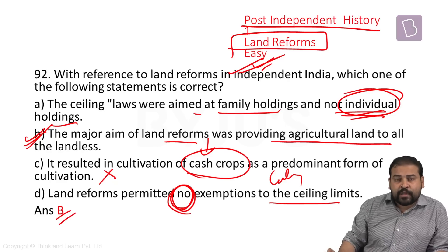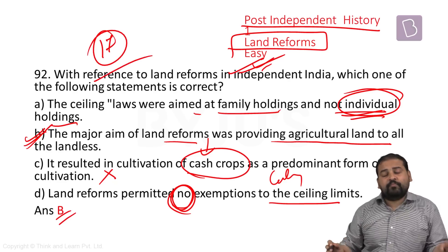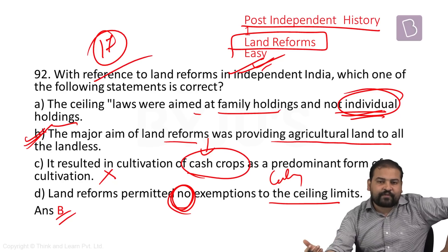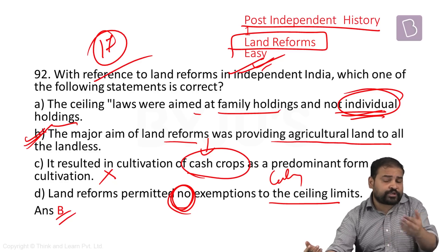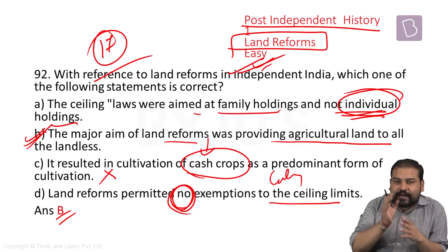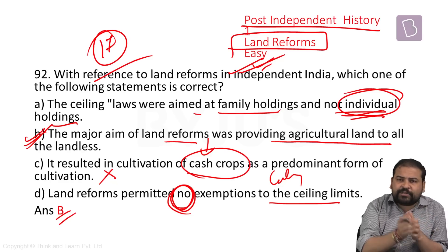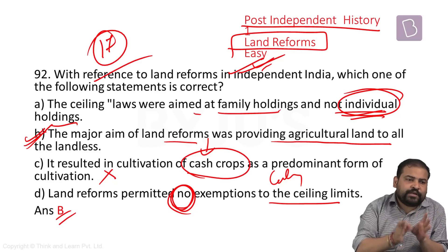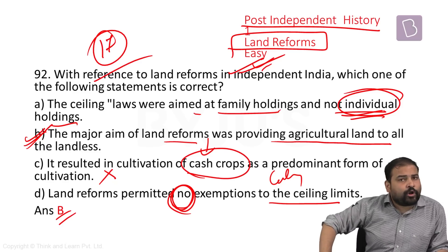So looking at the questions, there were 17 questions from history. Good number of questions came with a mix of easy, moderate, and tough. The focus has been shifted from traditional areas to non-traditional areas. Looking ahead, we would have to slightly concentrate on non-traditional areas like medieval as well as ancient, though the core areas have remained the same — we just need to focus on those core areas slightly more. That was all about the discussion.